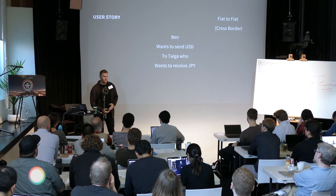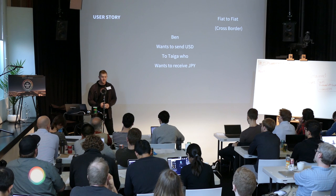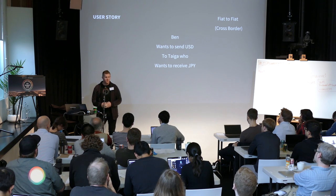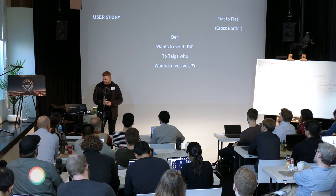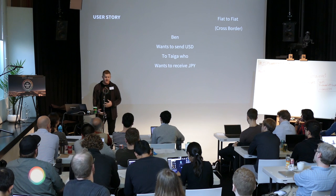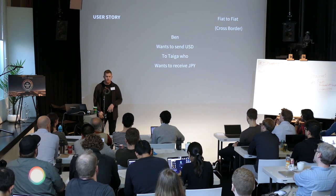This one's a little more complex and is really the problem that Ripple has been tackling for a while. Ben wants to send US dollars to Tyga, who's sitting right next to him, but Tyga accepts Japanese yen. How do we actually do that conversion? It's — believe it or not — a big pain. Working at Ripple, we've been working on this problem for a long time and it is a really, really hard problem. I think ILP will continue to evolve to solve this.